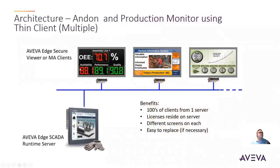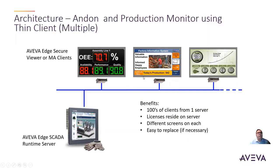One way would be to use thin clients — either secure viewer thin clients or mobile access thin clients — with big screen TVs or monitors hanging up, using either local computers or browser-based solutions. Some big screen TVs have built-in browsers that work without an external computer. Benefits include being able to have hundreds of these. You could display production information, OEE for overall equipment effectiveness, and general status. You could have one in the cafeteria or break room showing the weather, stock price, and general information to keep employees informed.